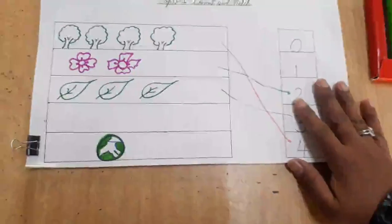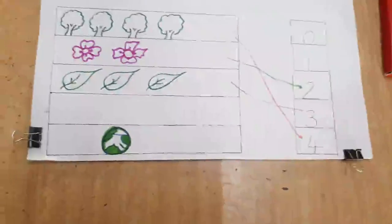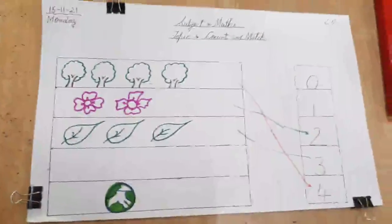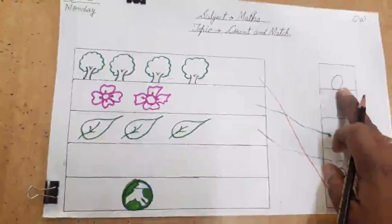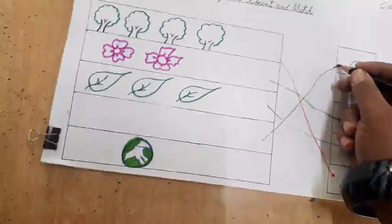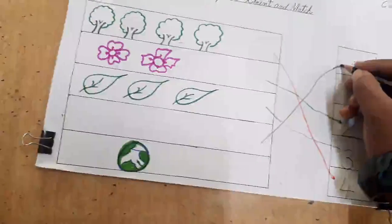Now, after this, we have a box that don't have any picture. So, that means we have to match it with number 0. So, let's do the matching with number 0.